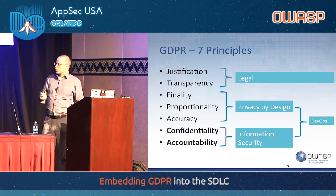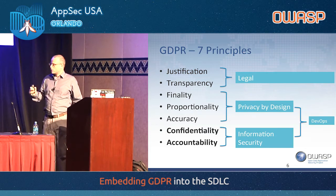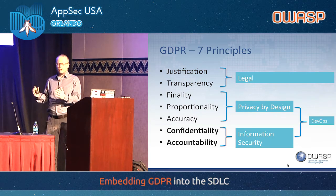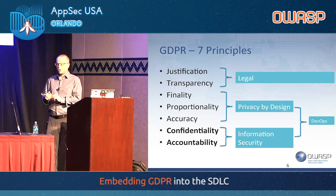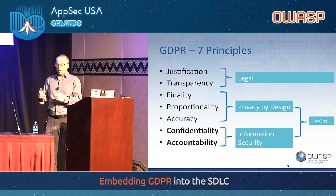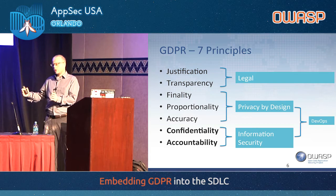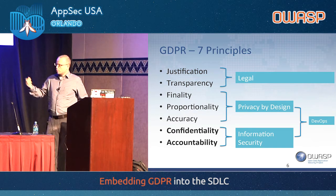The three principles in the middle are covered by privacy by design, and then you've got confidentiality and accountability, which we note as being information security. Confidentiality is the one we all understand — my privacy-related data must remain confidential, with no breaches or leakage. Accountability means the organization keeping the data will need to have a whole range of things documented, so that if there is ever a problem they can show they took the required steps — for example, we needed his home address because we needed to send a physical invoice. It's almost like an audit trail for all these things.